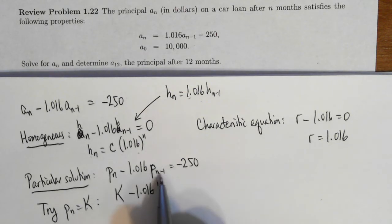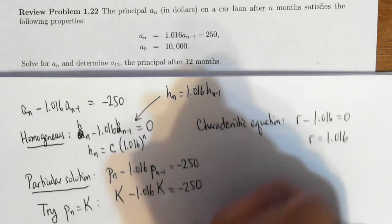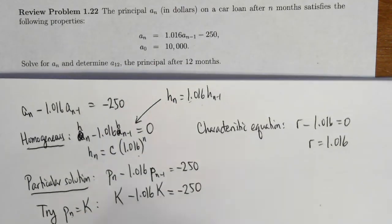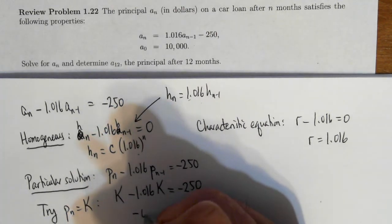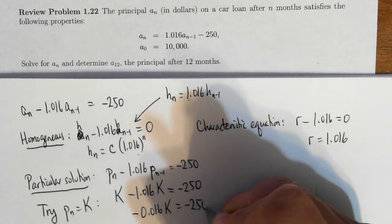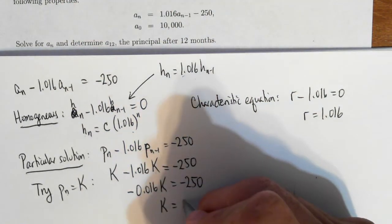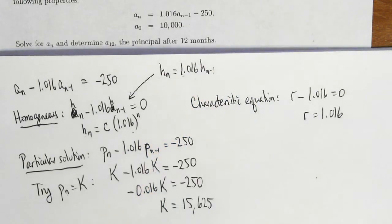So there's no n dependence on this. And so it doesn't matter what the subscript is. It'll be the same constant. Okay. Now I have an equation for k. So dividing, we find that k is equal to 15,625.